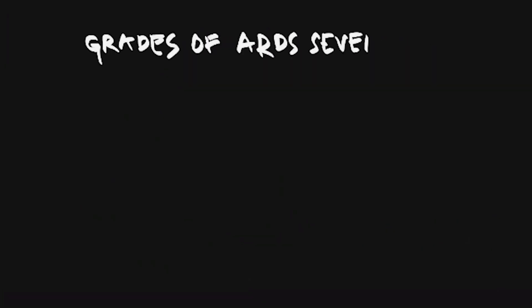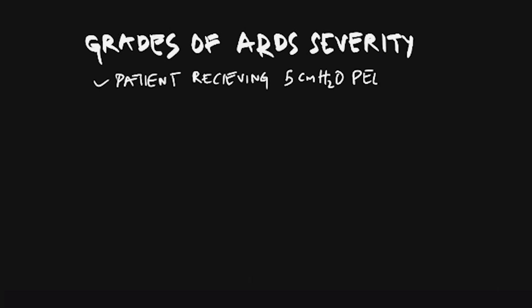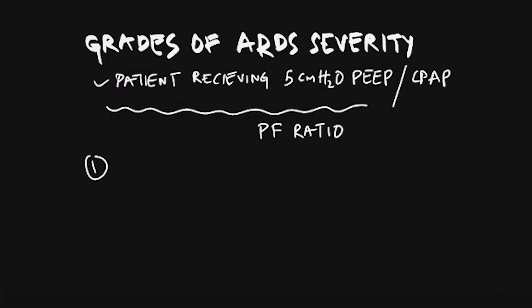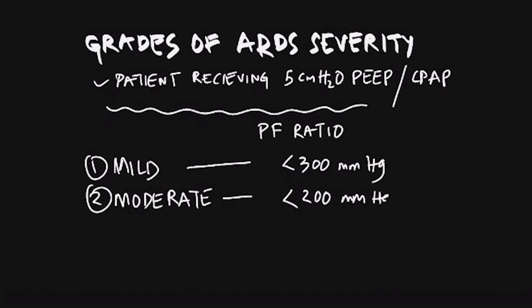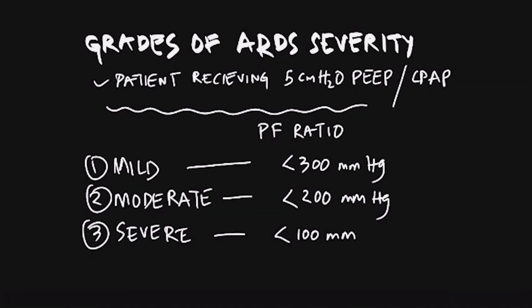To grade the severity of ARDS, the patient must be receiving a PEEP of 5 cm of water or must be on CPAP. Mild ARDS is defined by a PF ratio of less than 300 but more than 200 mmHg. Moderate ARDS is a PF ratio less than 200 mmHg, and severe ARDS is a PF ratio less than 100 mmHg.